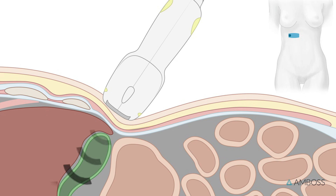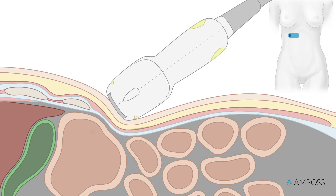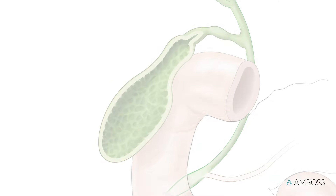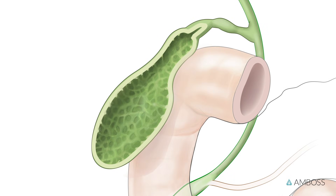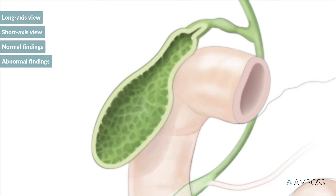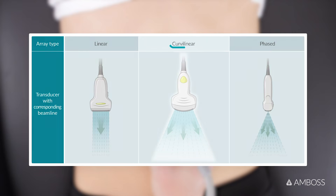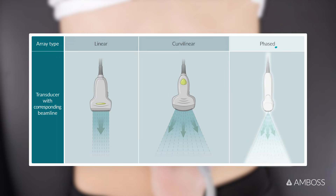Compared to air-filled bowel loops, liver parenchyma has a lower acoustic impedance, enabling a much better assessment of the underlying gallbladder. We'll now demonstrate how to scan the gallbladder, first in the long axis, then in the short axis. Afterwards, we'll show you the normal findings and abnormal findings of a gallbladder scan. We can use a curvilinear or phased array probe for these scans.